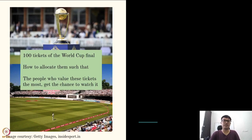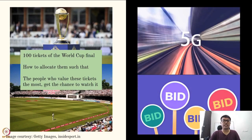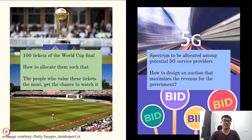Similarly, a scarce resource like the spectrum needs to be efficiently and fairly allocated among competing bidders. But since the desirability of the spectrum by the bidders is not known to the government, how should the government design the auction to (a) reveal the desirability and (b) maximize the revenue for the sale?